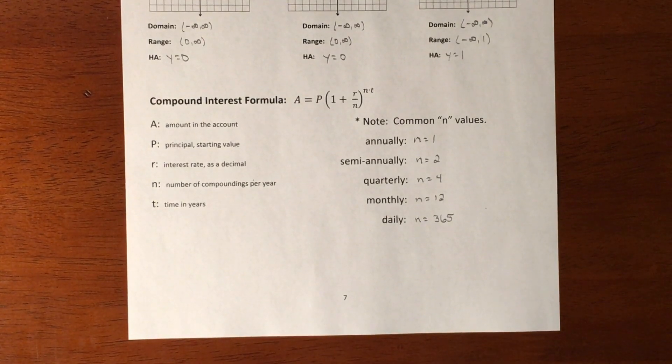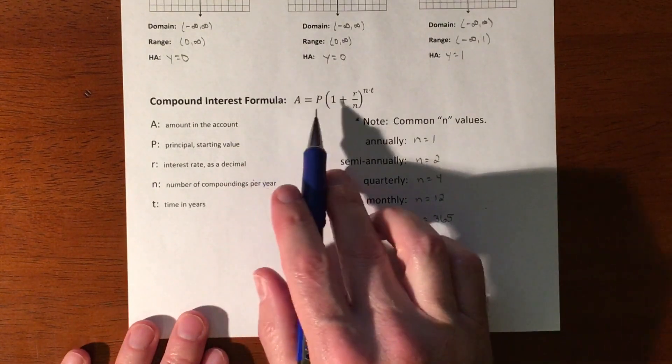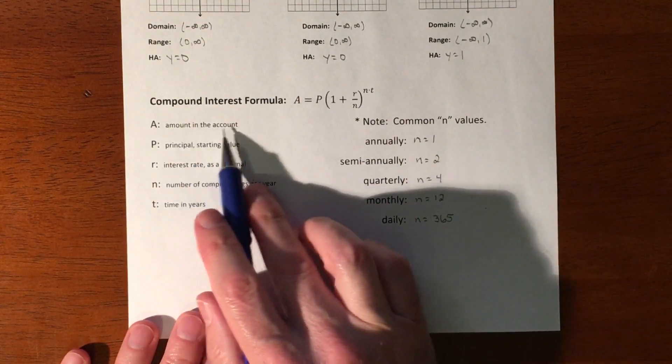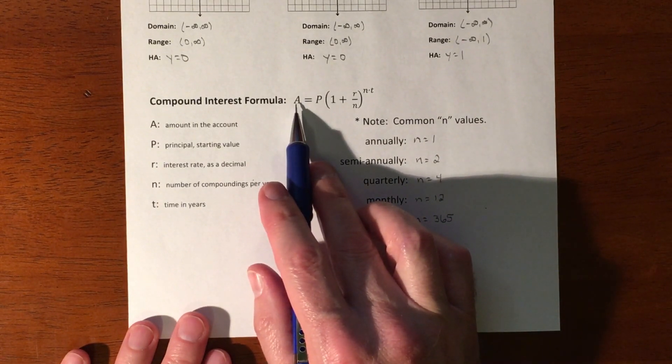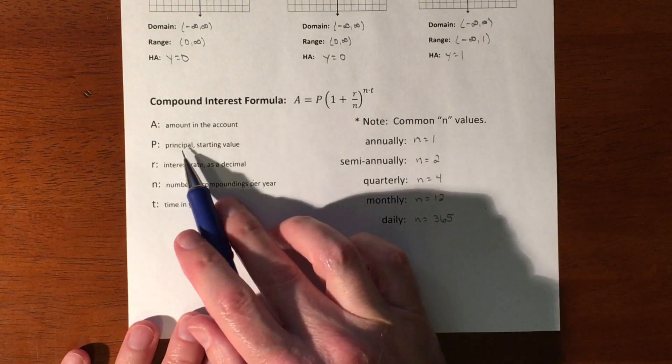In this lesson we're introducing the idea of compound interest. It's usually financial where something is compounding daily, monthly, quarterly, or something like that. Here is our equation: A represents the amount, your final amount in the account, and P represents your principal, also known as your starting value.